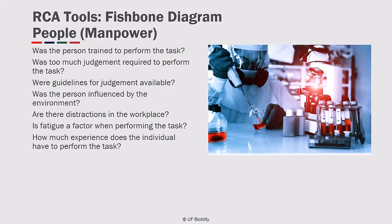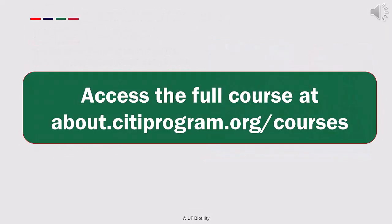One of the categories of a Fishbone diagram is people or manpower. The people category needs to be explored beyond the so-called human error root cause. Some things to consider are: was the person trained to perform the task? Was too much judgment required? Were guidelines for judgment available? Was the person influenced by the environment? Are there distractions in the workplace? Is fatigue a factor? And how much experience does the individual have to perform the task?